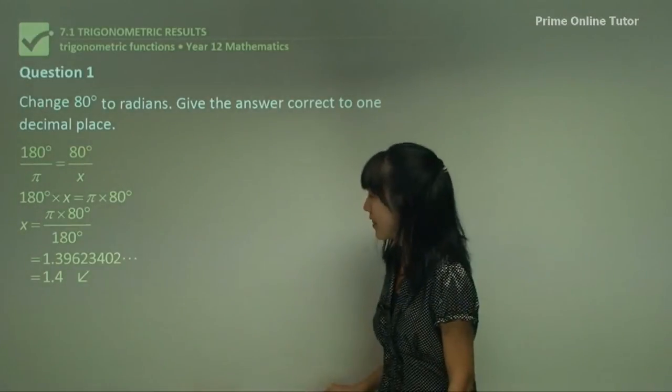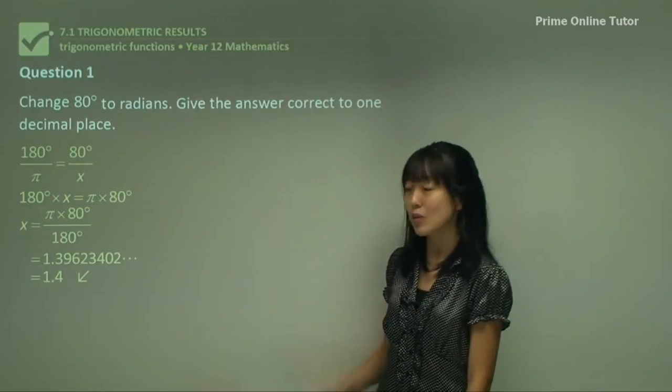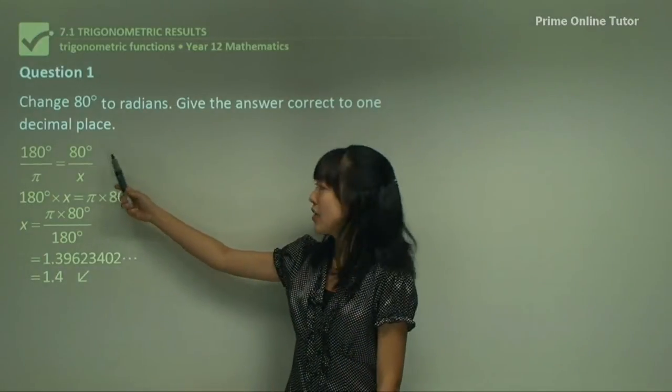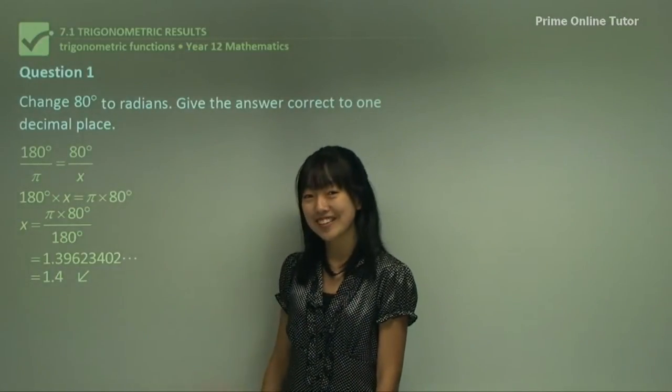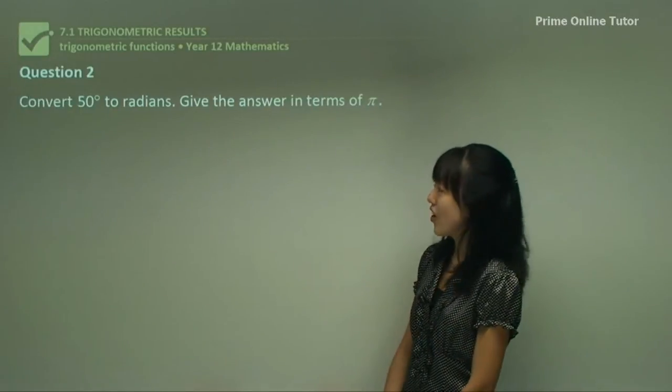Hopefully you understand that the first step to any of these questions is remembering the ratio that 180 degrees is equivalent to π. Moving on.